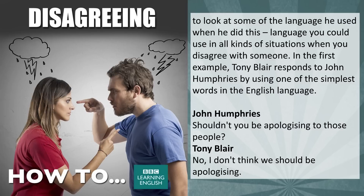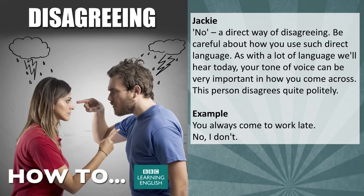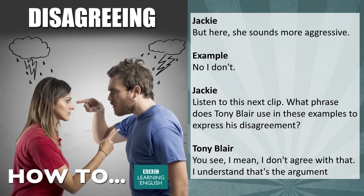In the first example, Tony Blair responds to John Humphreys by using one of the simplest words in the English language. 'Shouldn't you be apologising to those people?' 'No, I don't think we should be apologising.' 'No' — a direct way of disagreeing. Be careful about how you use such direct language. As with a lot of language we'll hear today, your tone of voice can be very important in how you come across. This person disagrees quite politely: 'You always come to work late.' 'No, I don't.' But here she sounds more aggressive: 'No, I don't.'